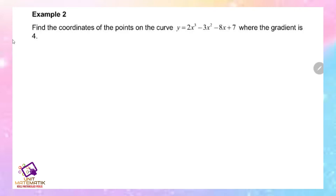Example 2: Find the coordinates of the points on the curve y = 2x³ - 3x² - 8x + 7 where the gradient is 4. We want to find the coordinates, so we have to find x and y, given that the gradient is 4.